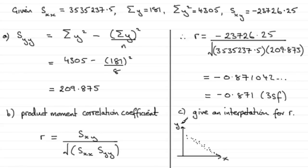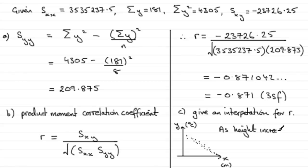Since y represents the temperature in degrees C of the European town and x was the height in meters of that European town, you can see that as the height increases, the temperature decreases. So as height increases, temperature decreases — that's the meaning they're looking for.